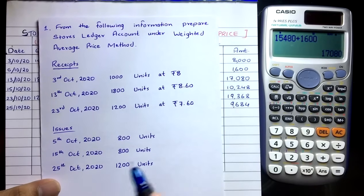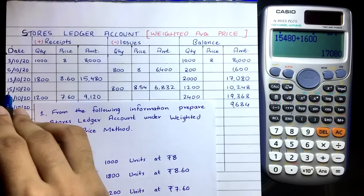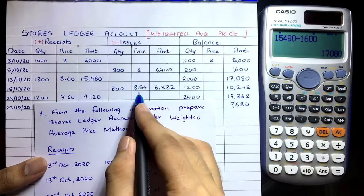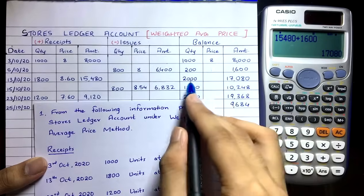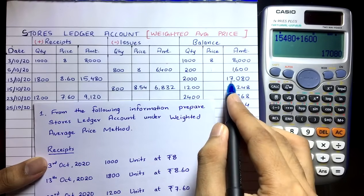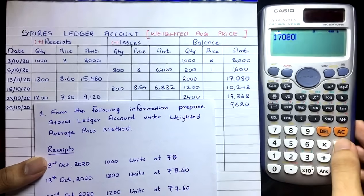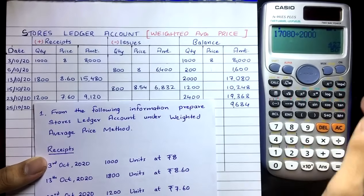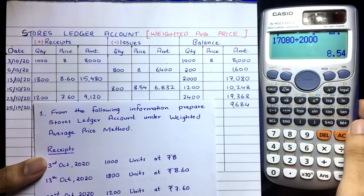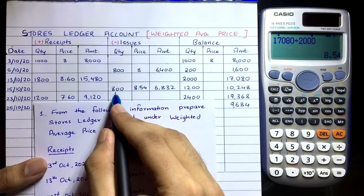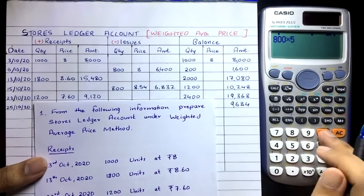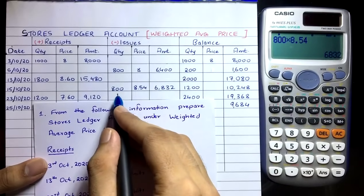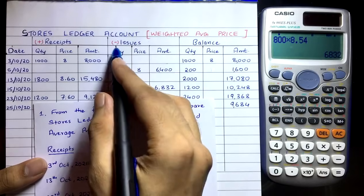On 15th October, we issue 800 units. Calculate weighted average price: total cost ₹17,080 ÷ total quantity 2,000 = ₹8.54. Issue at ₹8.54. Cost of issue: 800 × 8.54 = ₹6,832.